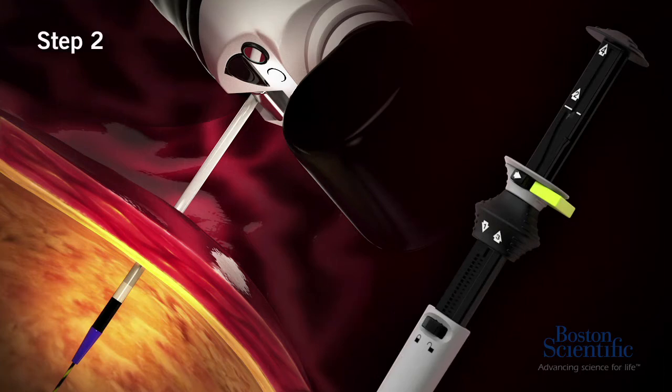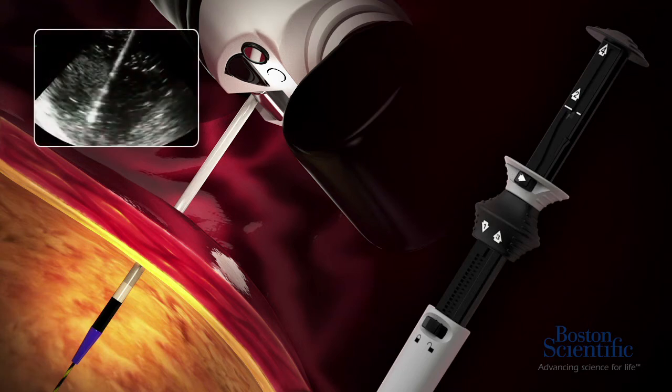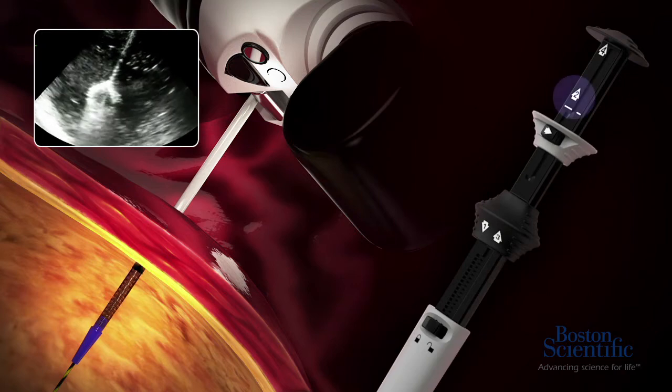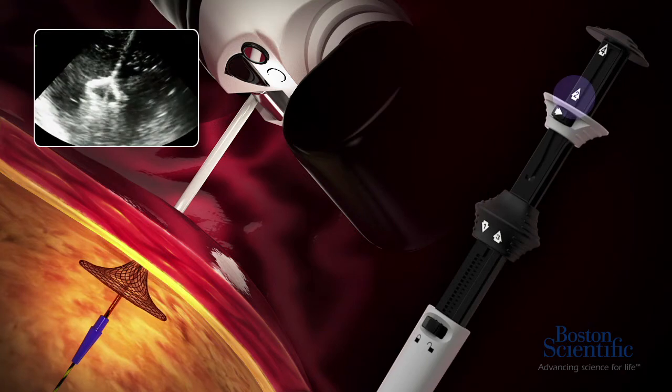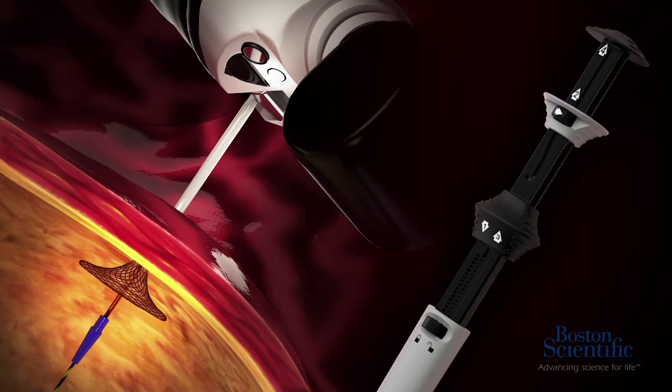Step number two. Deploy the distal anchor of the stent. Remove and discard the yellow safety clip on the stent deployment hub. Unlock the stent lock and slide the stent deployment hub upwards until the stent deployment hub locks into place at the white line next to the number two arrow.